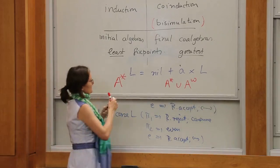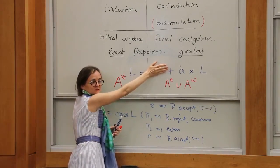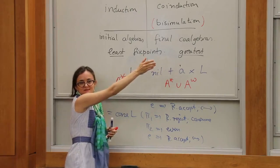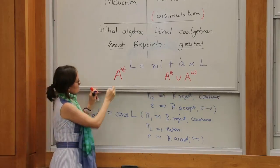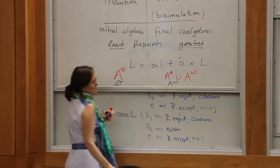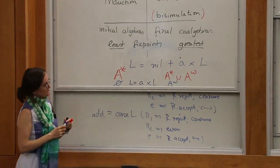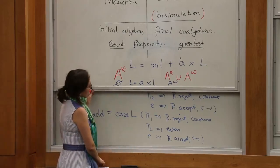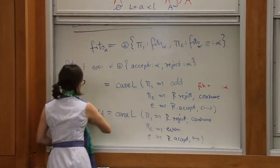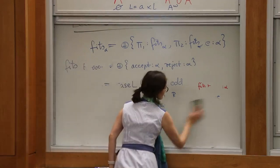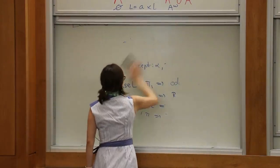If I take L = A × L, the least fixed point solution would be the empty set, and A^ω on the greatest fixed point side. So the least fixed point of the stream equation is empty, and the greatest is all infinite streams.